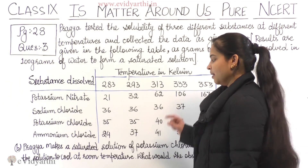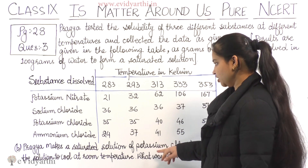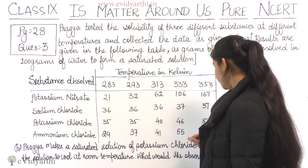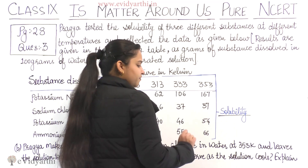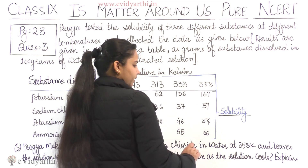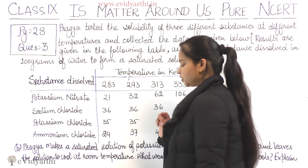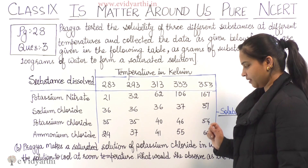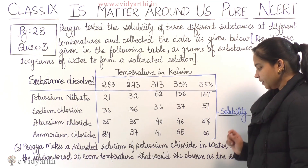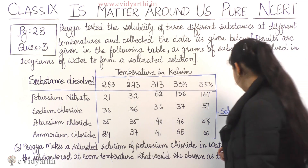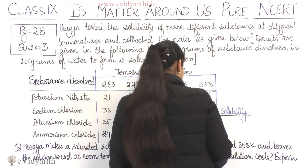Now coming to Part B: Pragya makes a saturated solution of potassium chloride in water at 353 Kelvin and leaves the solution to cool at room temperature. What would she observe as the solution cools? Explain.